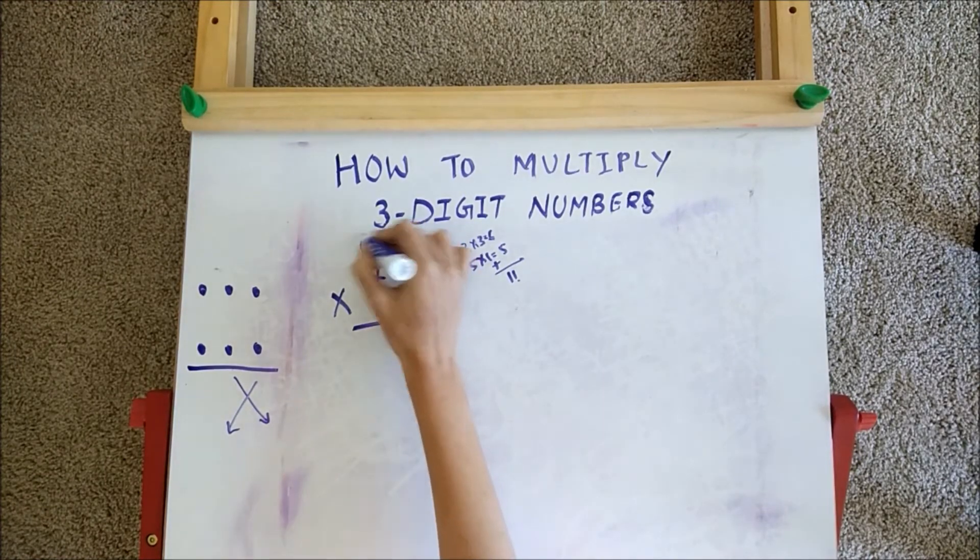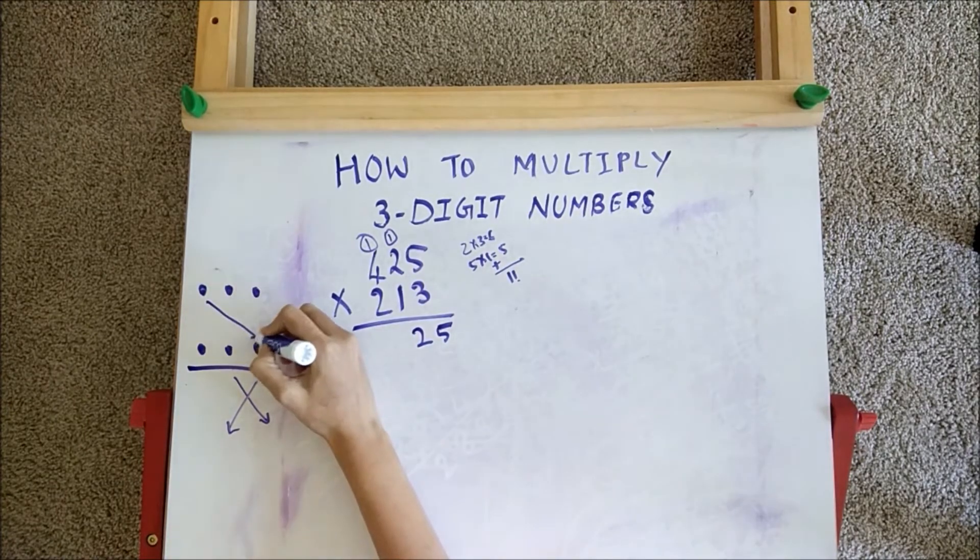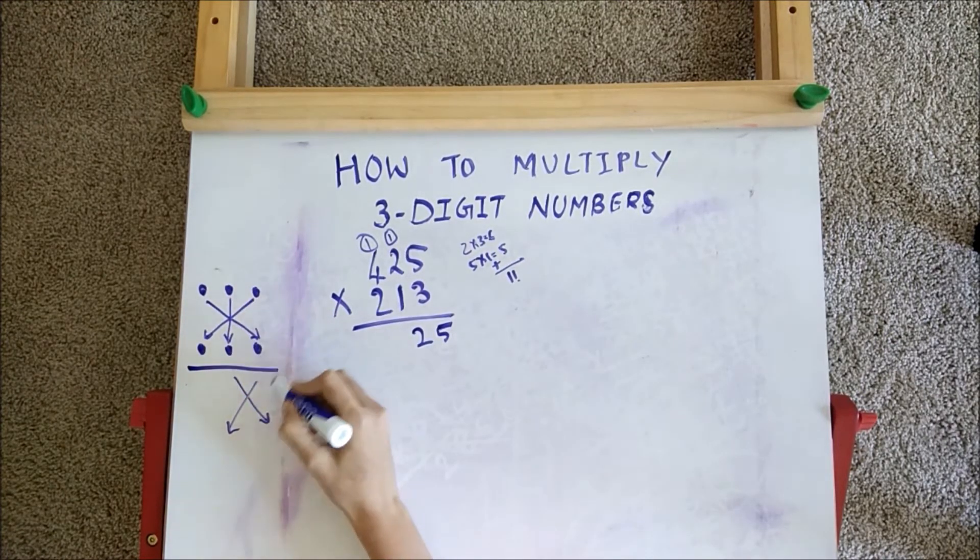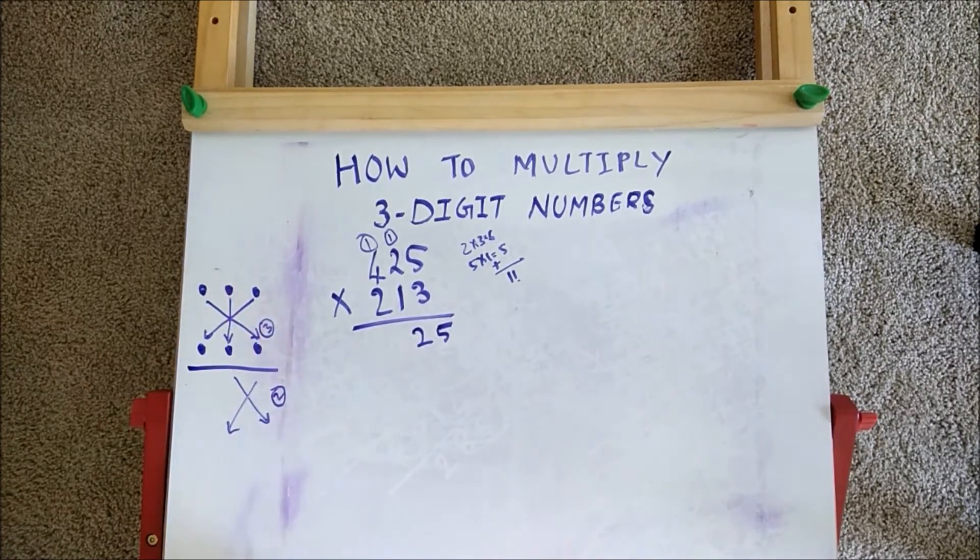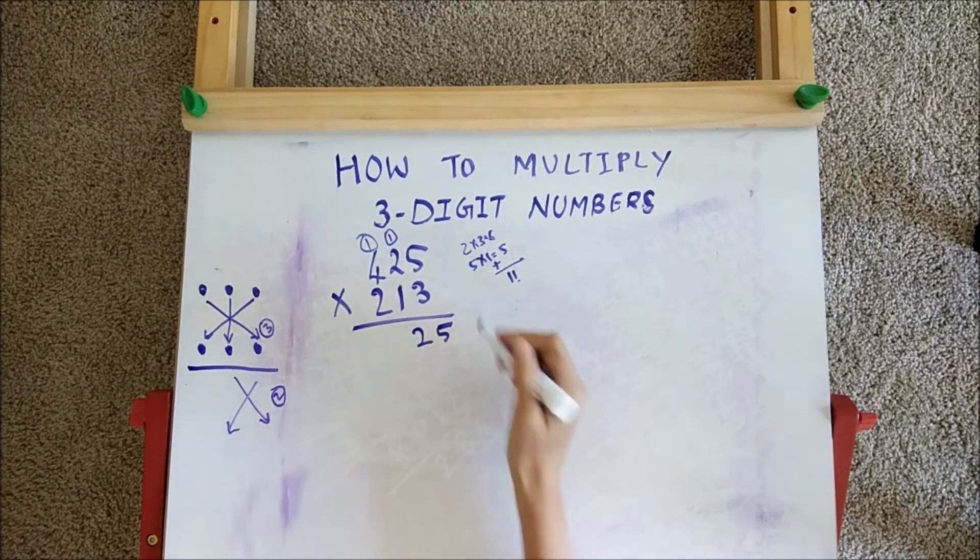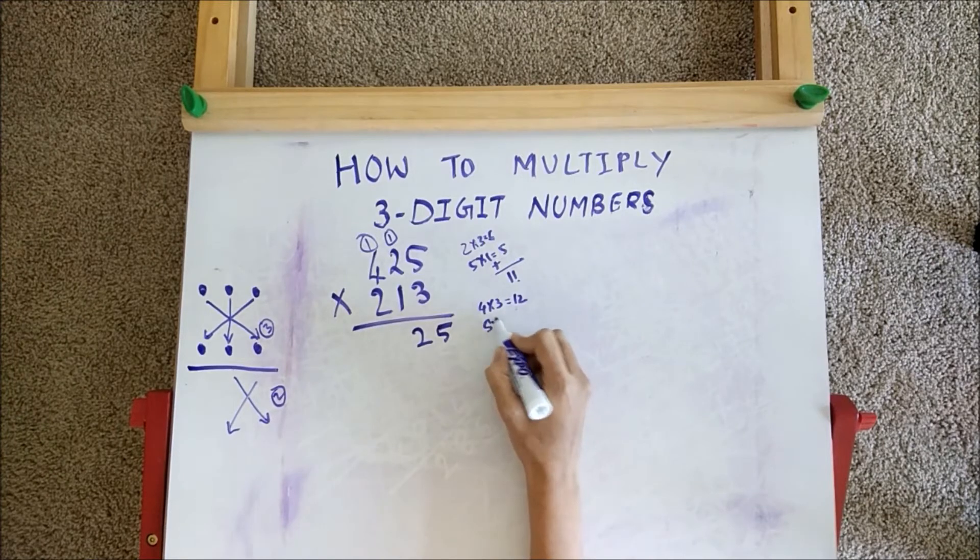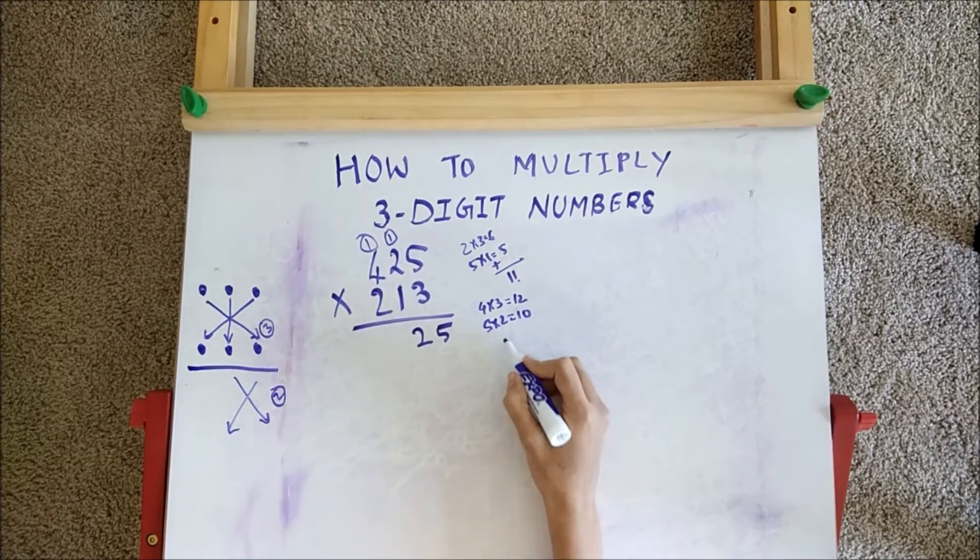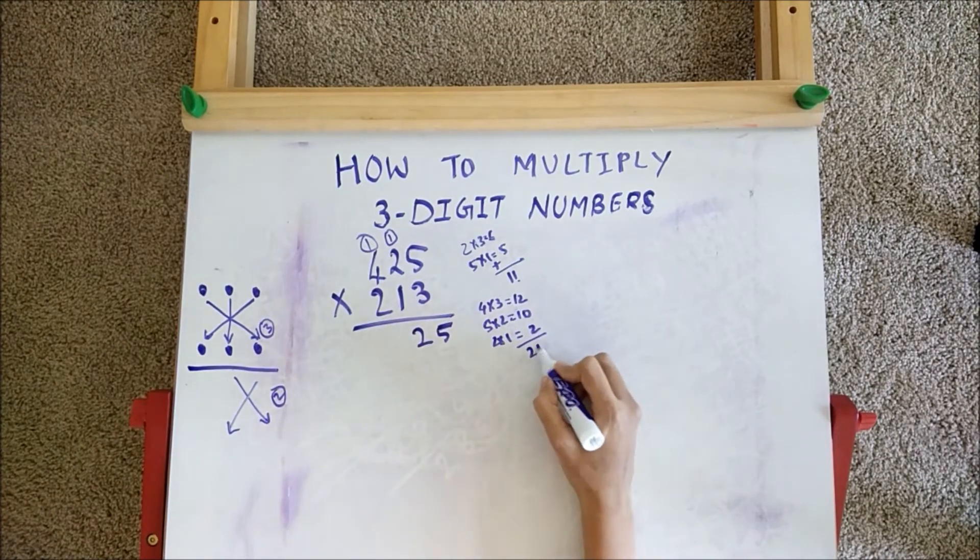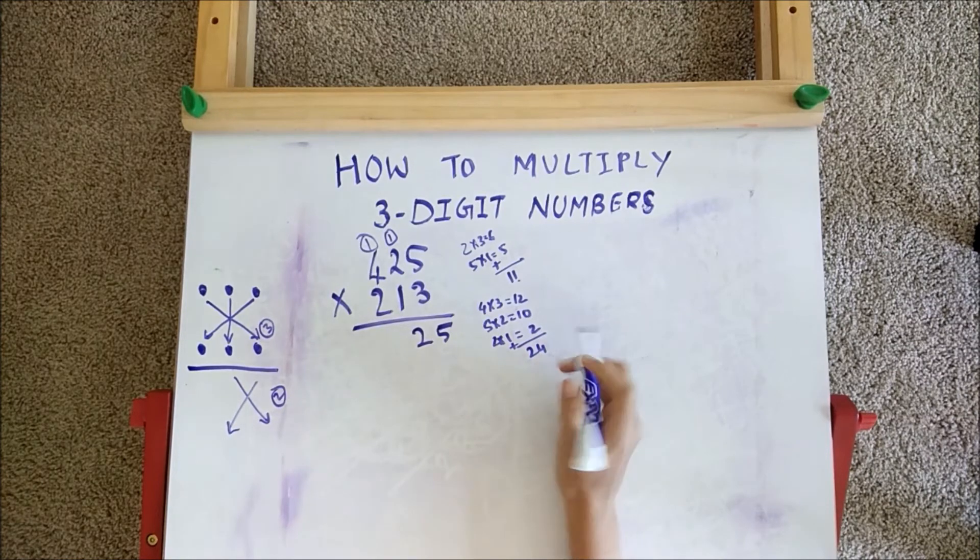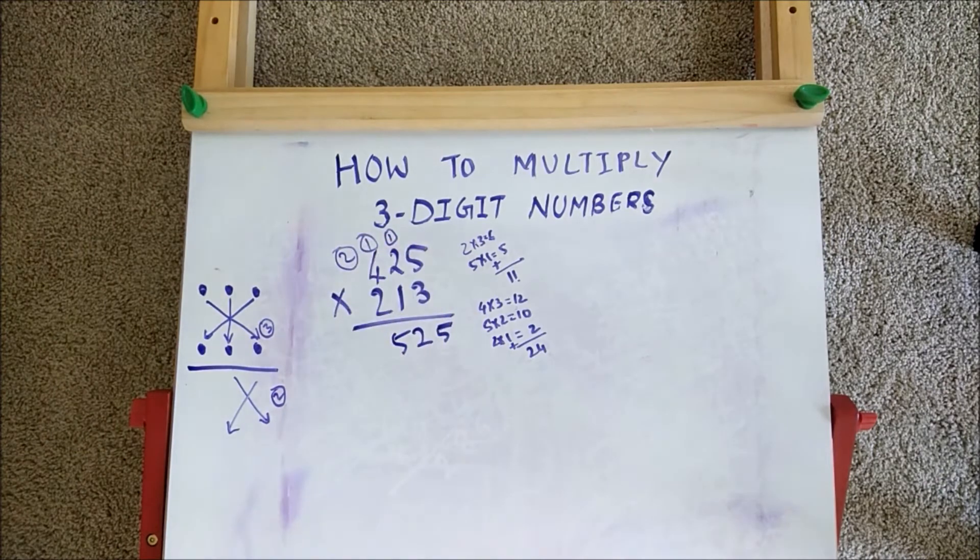In step 3, we cross multiply all the numbers and add their products. So 4 times 3 is 12, 5 times 2 is 10, and 2 times 1 is 2. Adding all this we get 24, and 1 is from our carry. So we write 5 here and carry 2.